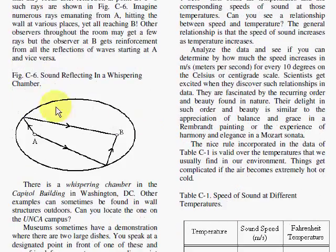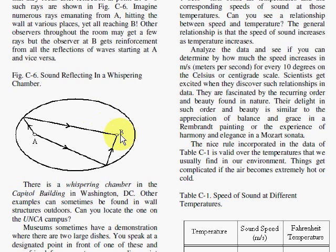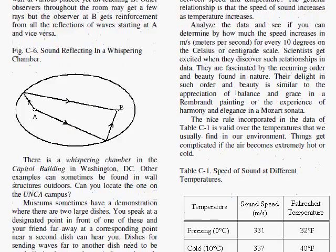Here's a whispering chamber — a specially shaped room so that you have two points A and B where if you speak at A, sound, no matter where it hits the wall, will reflect back to B. You can hear whispering from A to B and vice versa, while other places in the room you may not hear anything at all.